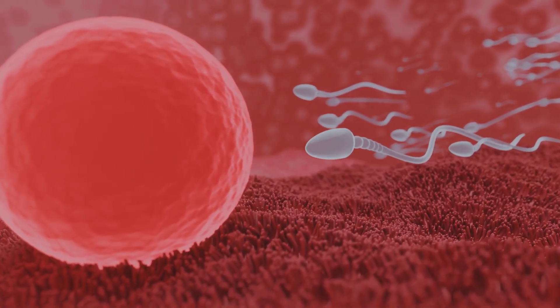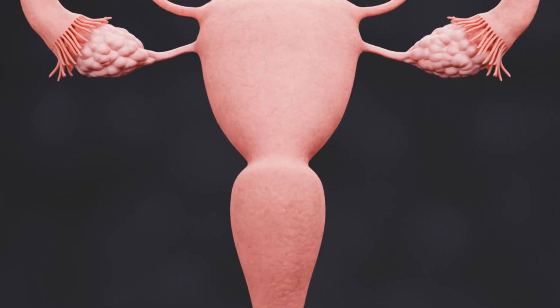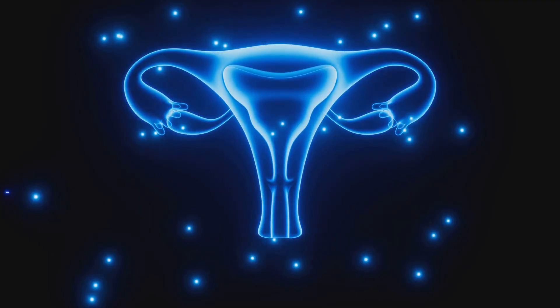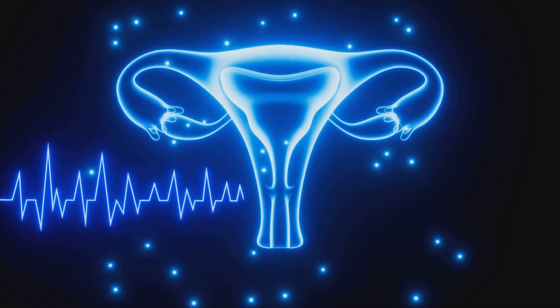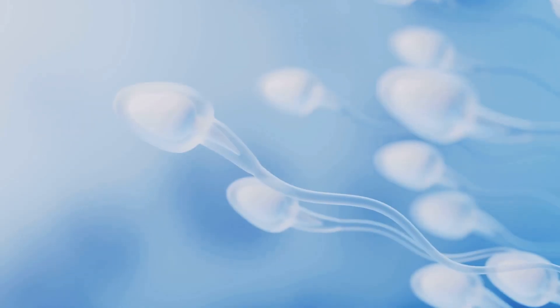If the sperm make it through the cervix, they enter the uterus. Imagine a soft, pear-shaped chamber. The uterus is a surprisingly active place with muscular contractions that can help or hinder the sperm's progress. But the journey is far from over.